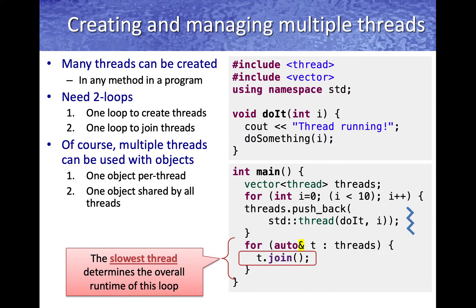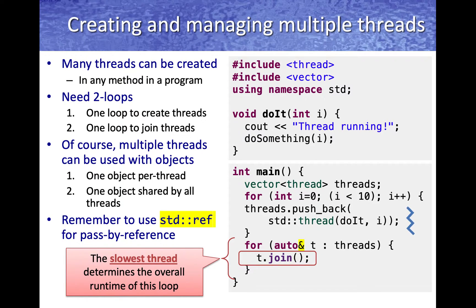You can use multiple threads with objects. You can use either one object per thread, so that means each thread works with its own object, or you can have one shared object that is used by all of the threads. Remember to use the std::ref wrapper method to pass by reference when working with threads.